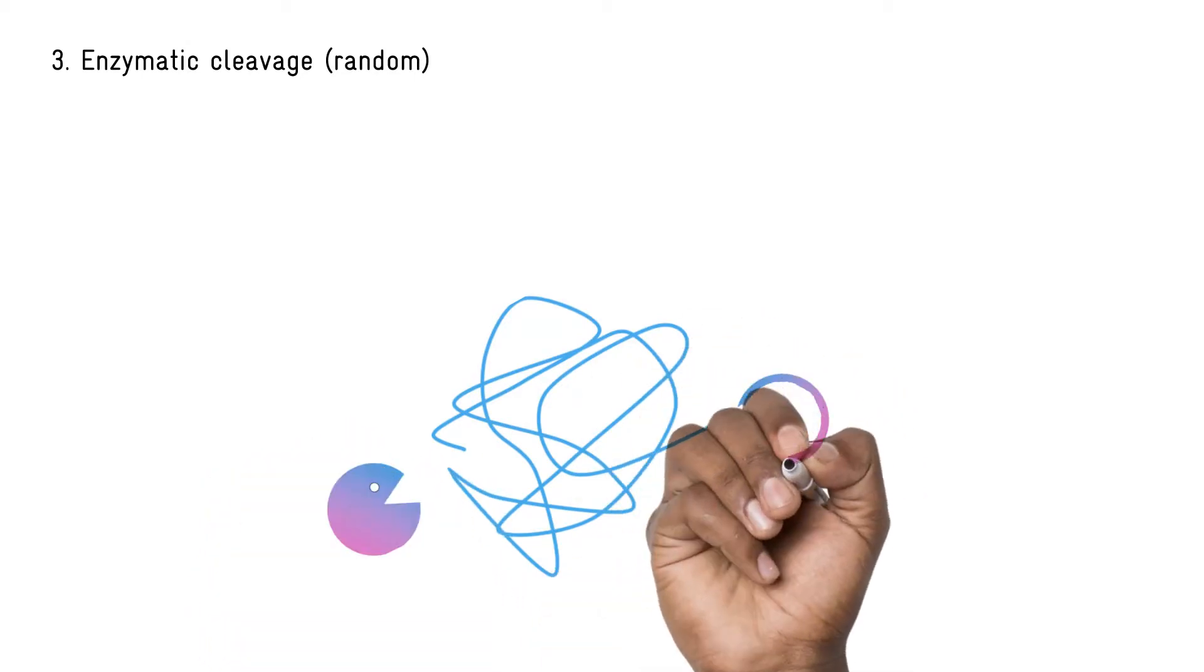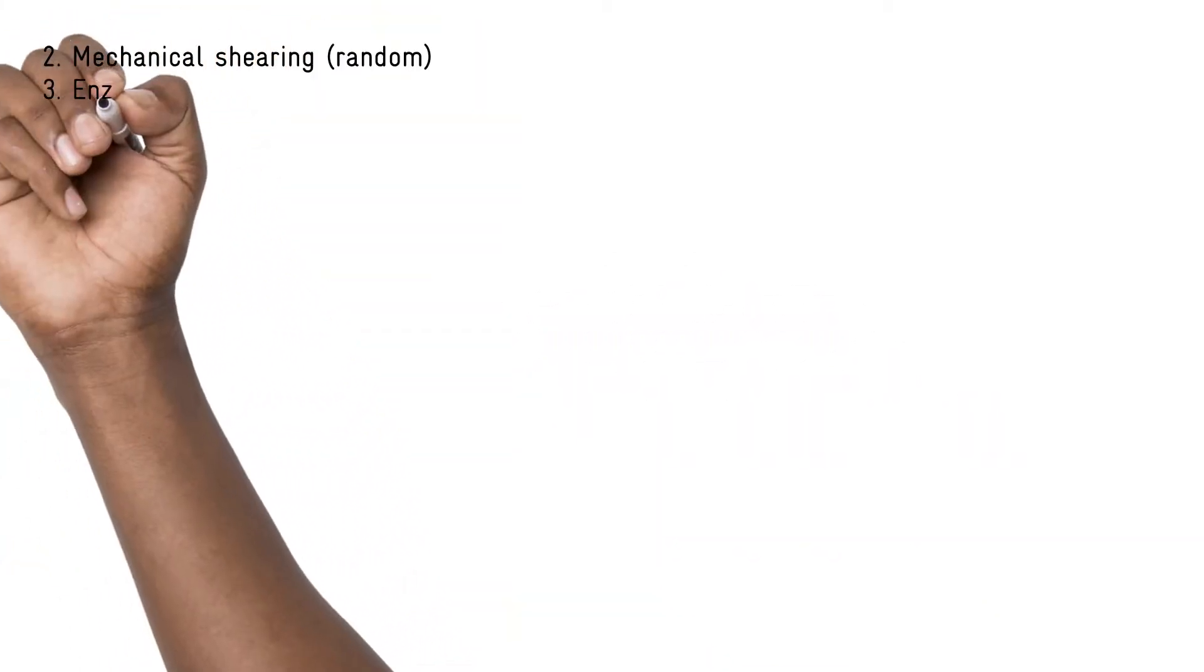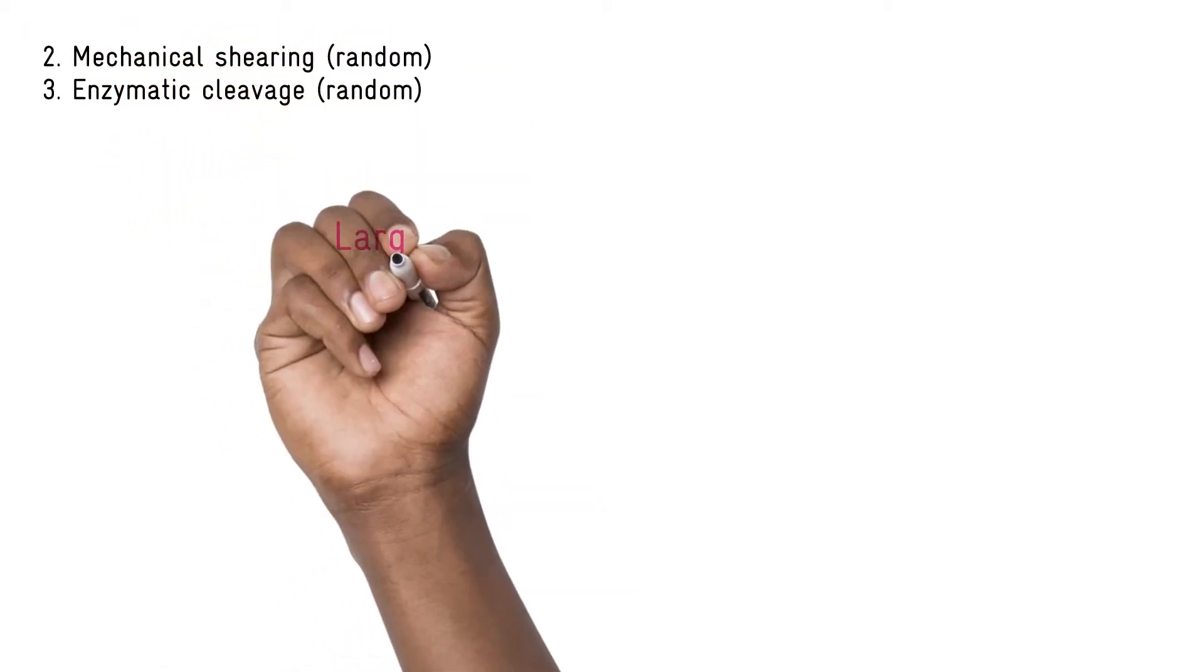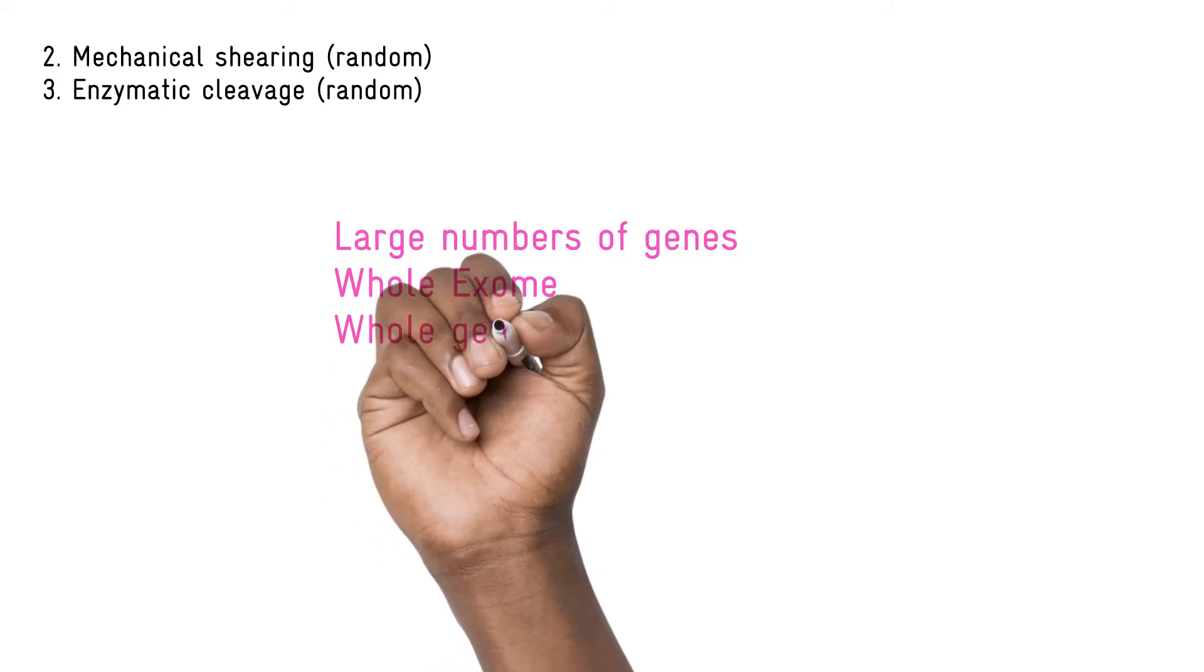Both mechanical and enzymatic methods then require repair of the fragmented ends of your DNA, which adds time and complexity. But both of these methods are best for when you want to target large numbers of genes or if performing whole exome or whole genome sequencing.